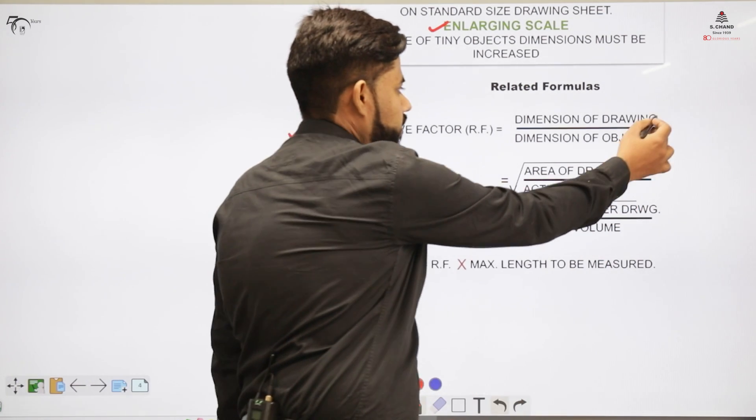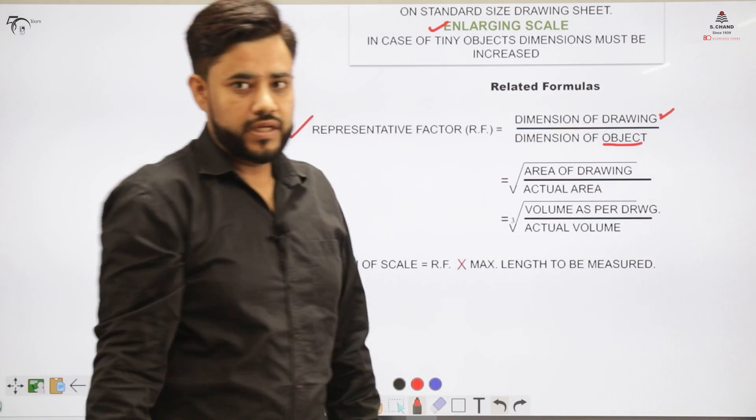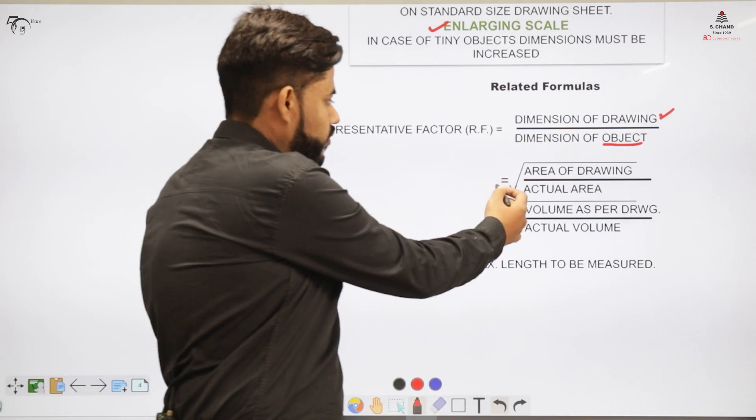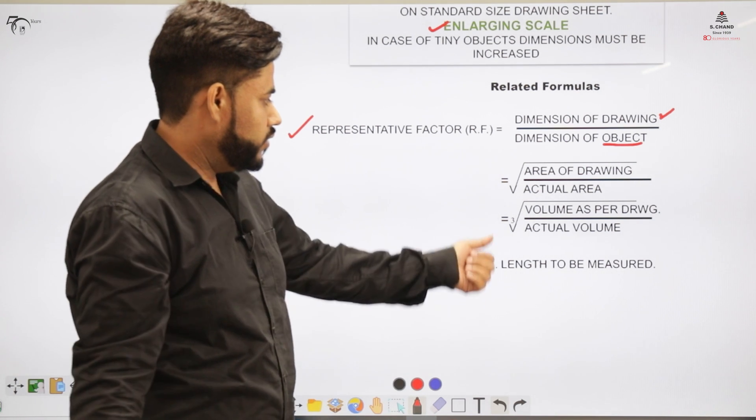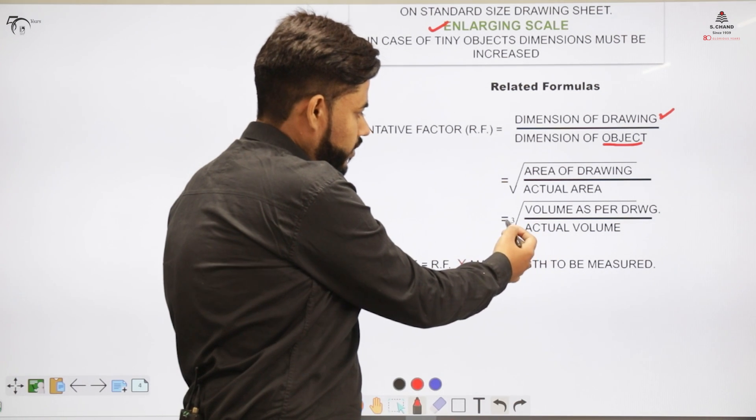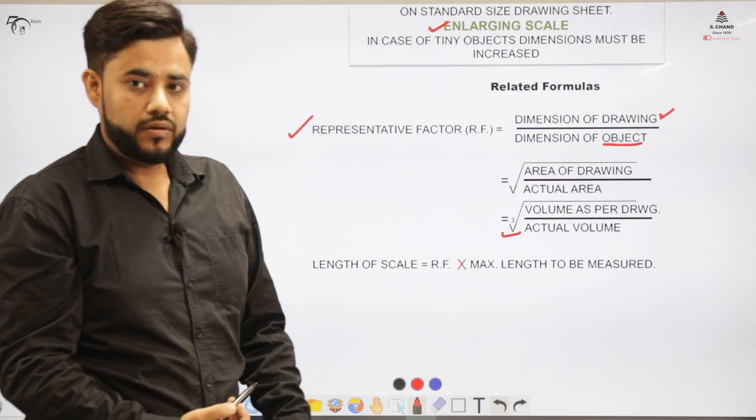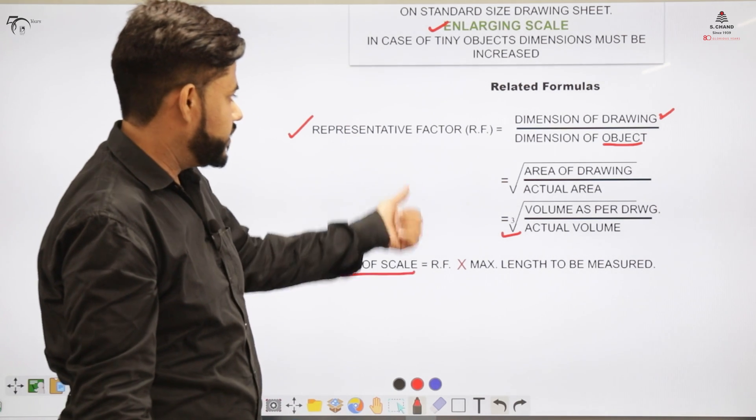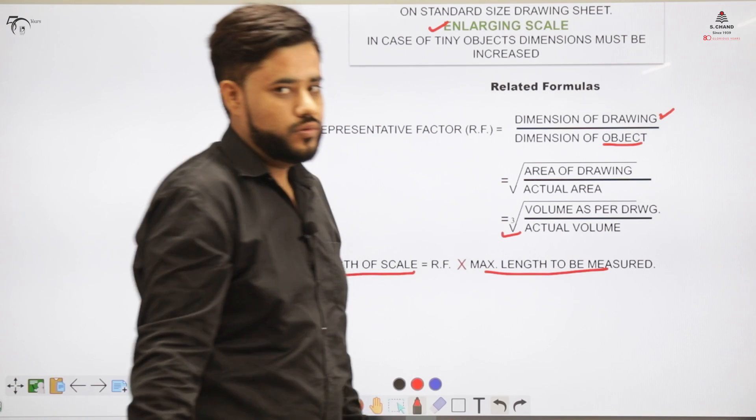Additionally, if you have the area of the drawing, square root will come in that ratio. And if you have the volume, for that volume ratio cube root will occur. And we also want to calculate the length of the scale. So length of the scale would be RF, the representing factor, multiplied by maximum length that we want to measure.